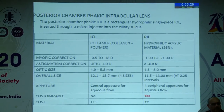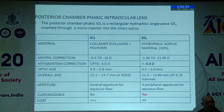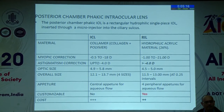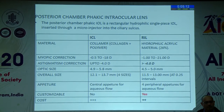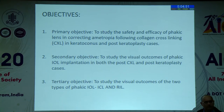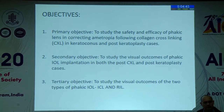Posterior chamber phakic IOLs are one option for correcting high astigmatism. Two types were used: ICL and RIL (Refractive Implantable Lens — an Indian-made hydrophilic acrylic, customizable lens). The ICL can correct astigmatism up to minus 4 diopters, while the RIL can be customized based on white-to-white measurement and patient astigmatism, at approximately half the cost of ICL. Study objectives were: primary — efficacy and safety of phakic lenses post-C3R and post-keratoplasty; secondary — visual outcome comparison between the two procedure groups; tertiary — visual outcomes between ICL and RIL.